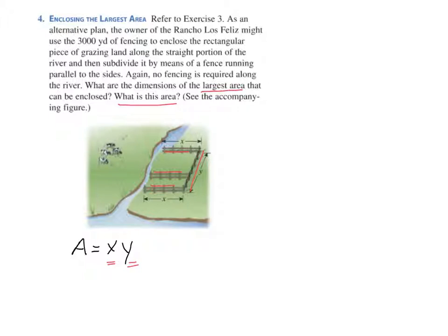We only have 3,000 yards of fence to build this grazing land with. And so the way we'll write that is there are three x lengths plus one y length, and that equals 3,000. And that equation there is our constraint.